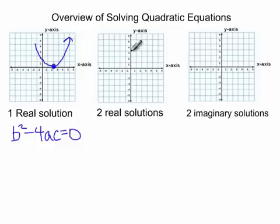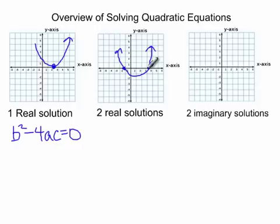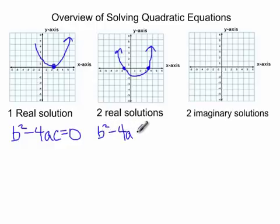Most of the time, quadratic equations have two solutions. Remember, this is a parabola, and it crosses not one place but two places — two real solutions. When does this happen? When b squared minus 4ac is positive, or we could say greater than zero.